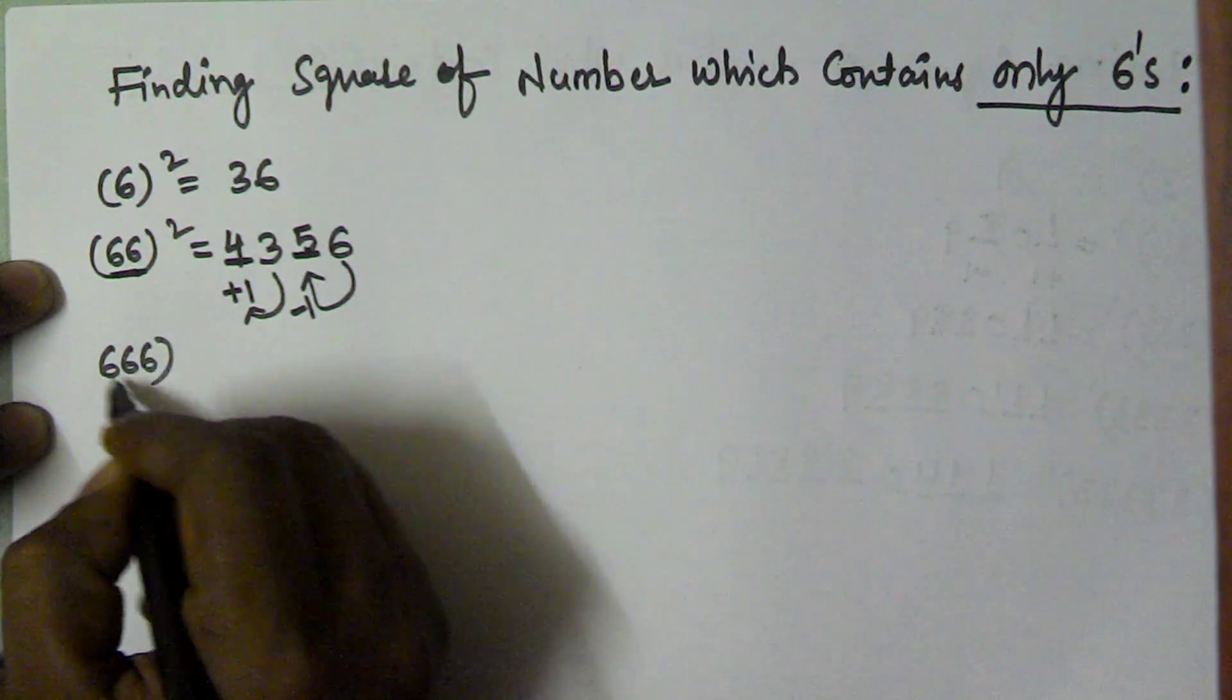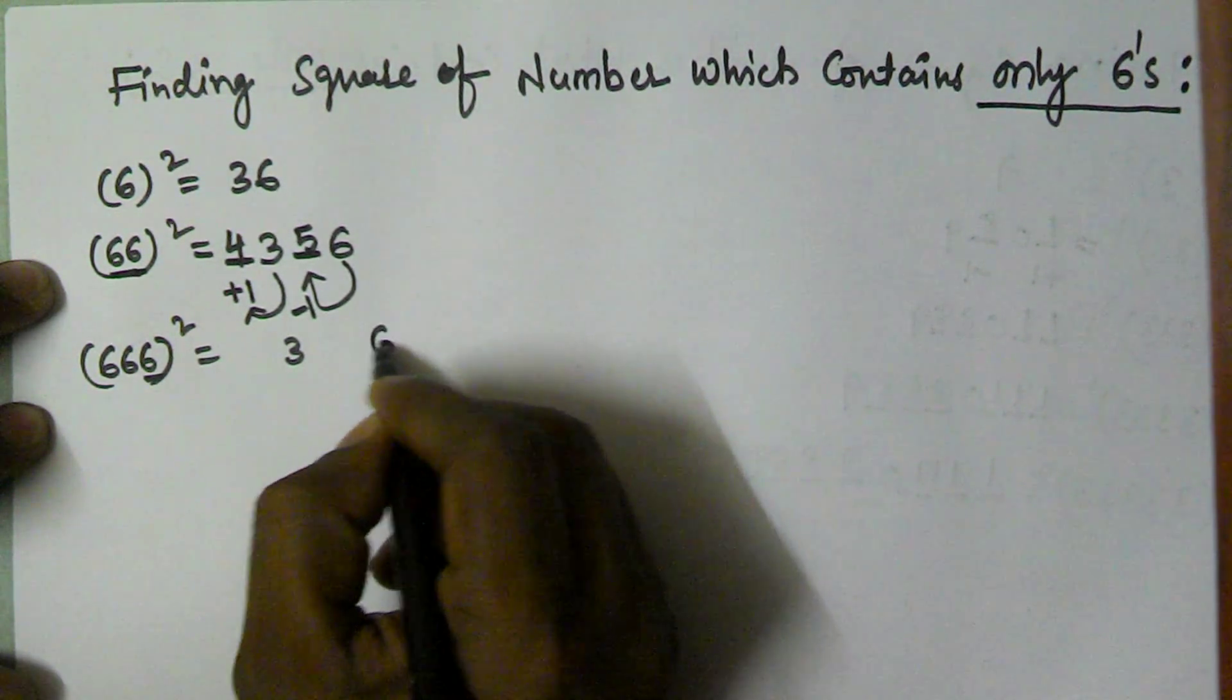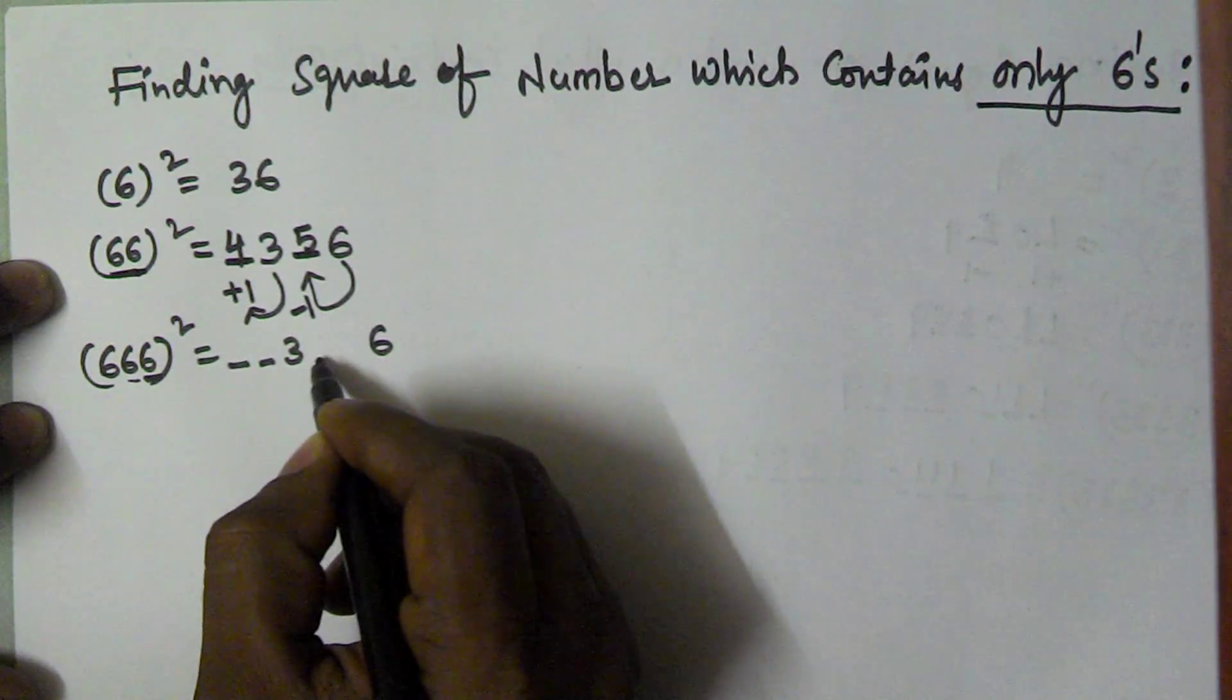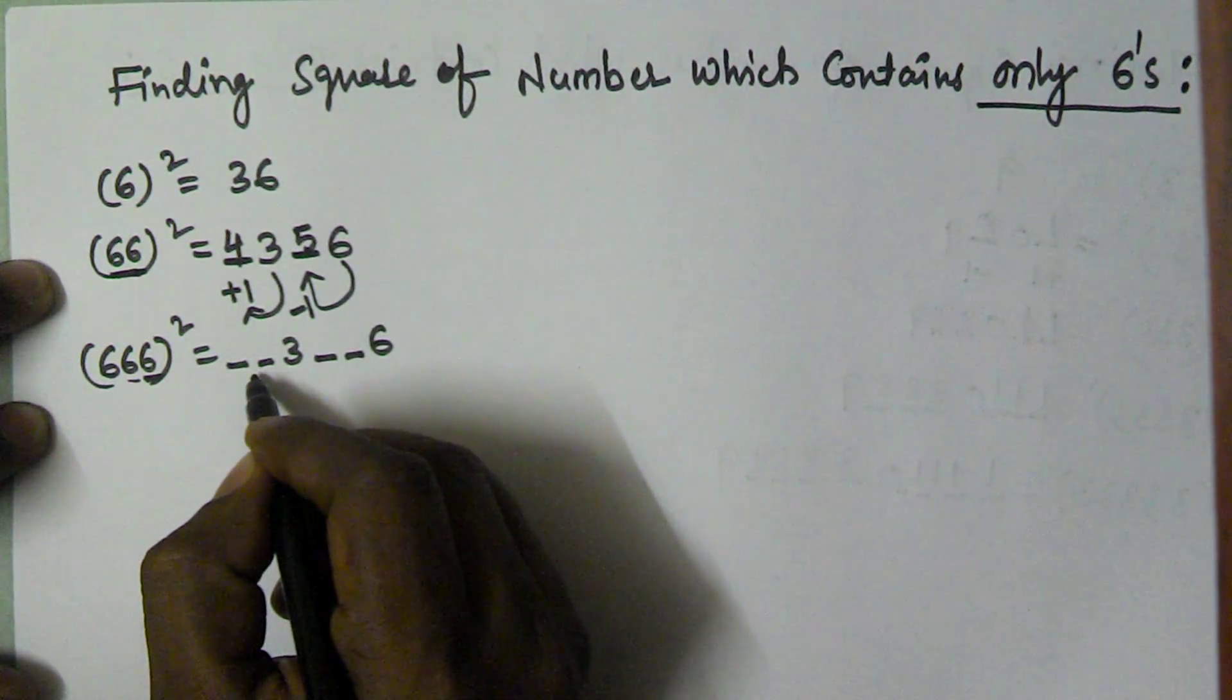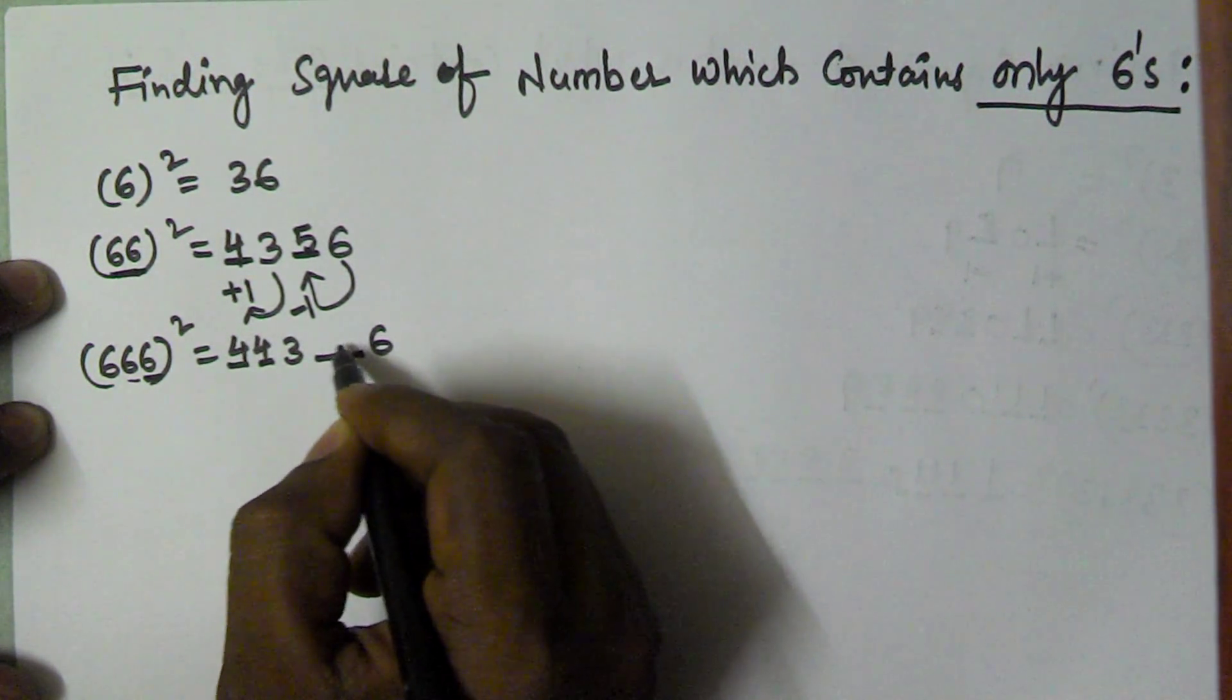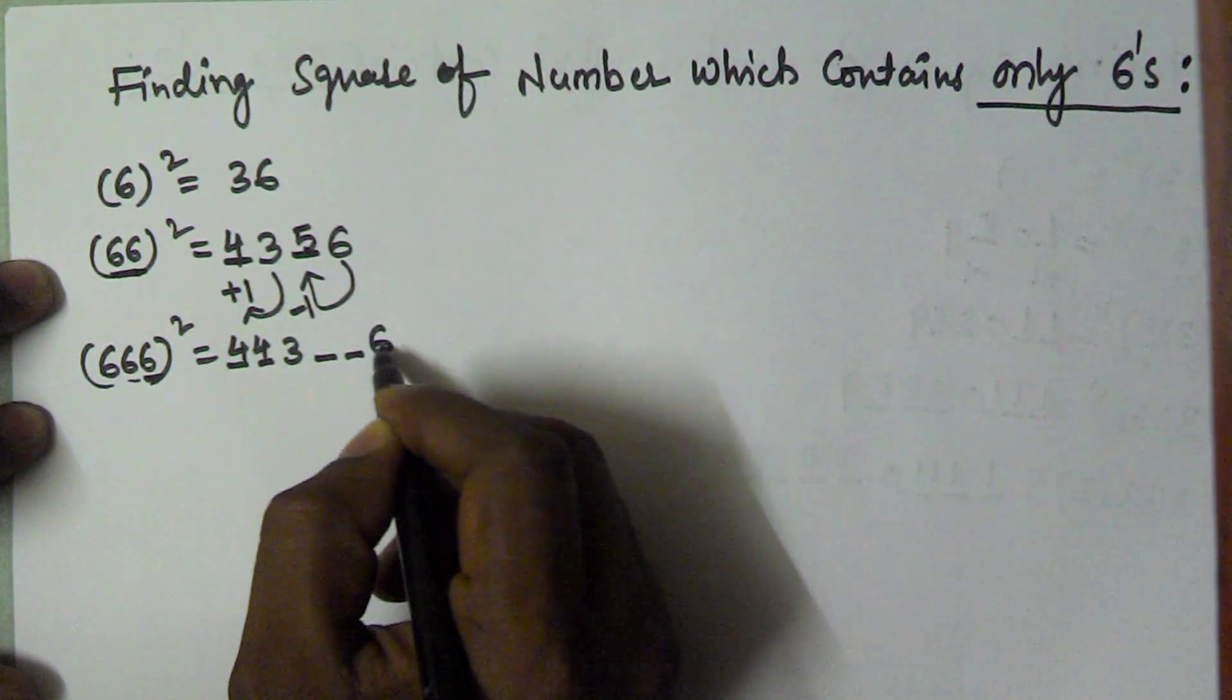Now let's find the square of triple 6. The 6 square is 36, it contains 3 digits, that's why I'm taking 2 places before 3, 2 places before 6. So here we have to fill with plus 1 of this number, so that is 4 and 4. Here we have to fill with minus 1, so that is 5 and 5.